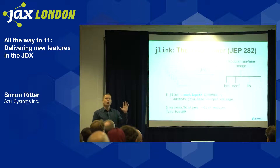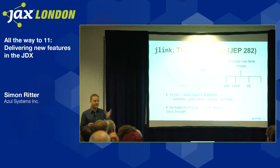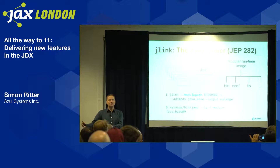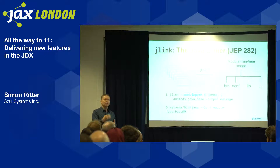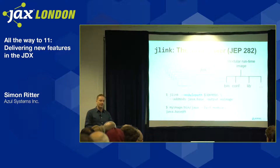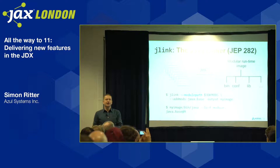The other thing with JDK 9 was: now that we have modules, how do we use them to build a runtime? They introduced Jlink. Jlink lets you specify certain modules and build a runtime — similar to the JRE, but there is no JRE anymore — that only includes the modules you want. You run Jlink, tell it where the modules are located, which module to include, and where you want the output. You get a directory structure just like the JDK with a bin directory, conf directory, lib directory, and so on.